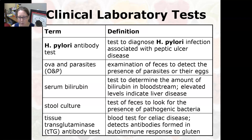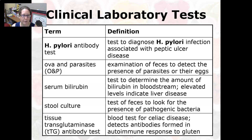A stool culture is a test of feces to look for the presence of pathogenic bacteria. Stool contains a lot of bacteria — a lot of it is supposed to be there — but a stool culture looks specifically for pathogenic strains such as salmonella. A tissue transglutaminase antibody test, or TTG, is a blood test for celiac disease.